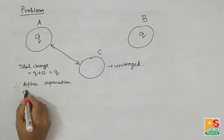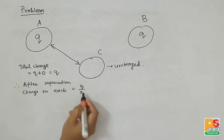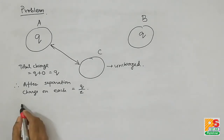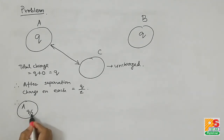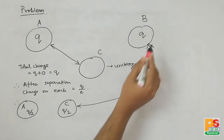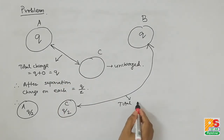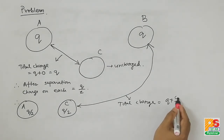Now if A and C are joined, the charges will be equally shared because they are identical in shape and size. So after separation, the charge on A will be Q by 2 and the charge on C will also be Q by 2. The situation now is: charge on A is Q/2 and charge on C is Q/2.